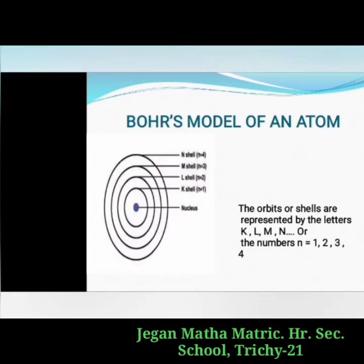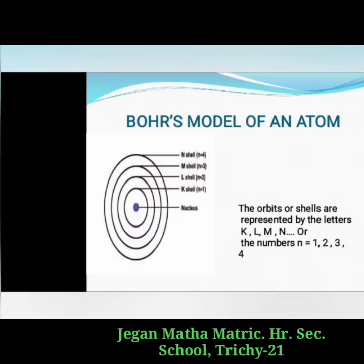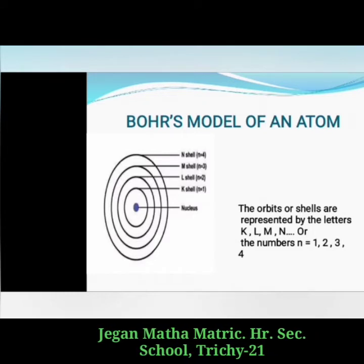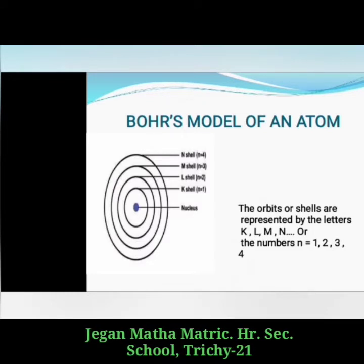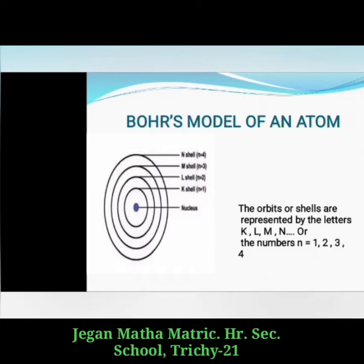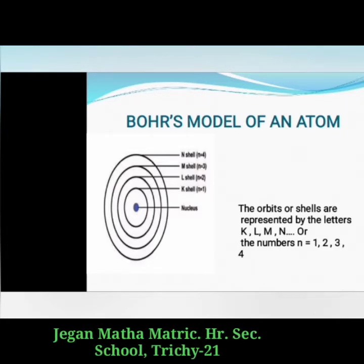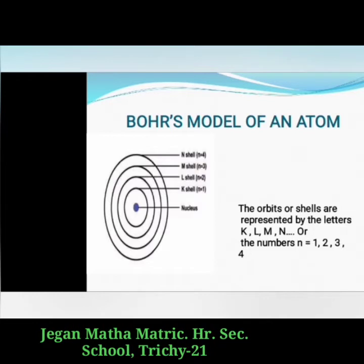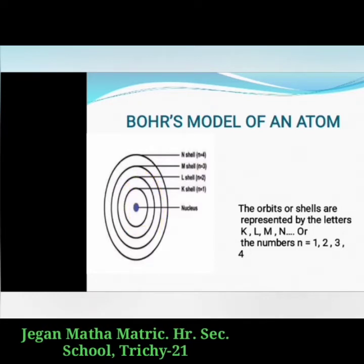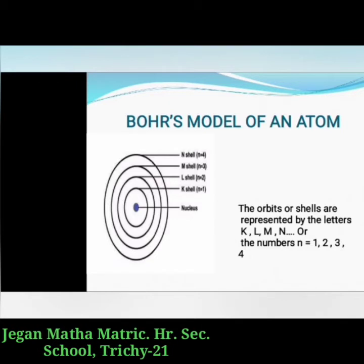Similarly, we have L shell electrons, M shell electrons, and N electrons in the successive shells. These orbits are associated with a fixed amount of energy, so Bohr called them energy levels or energy shells. These circular orbits are thus known as energy levels or energy shells.